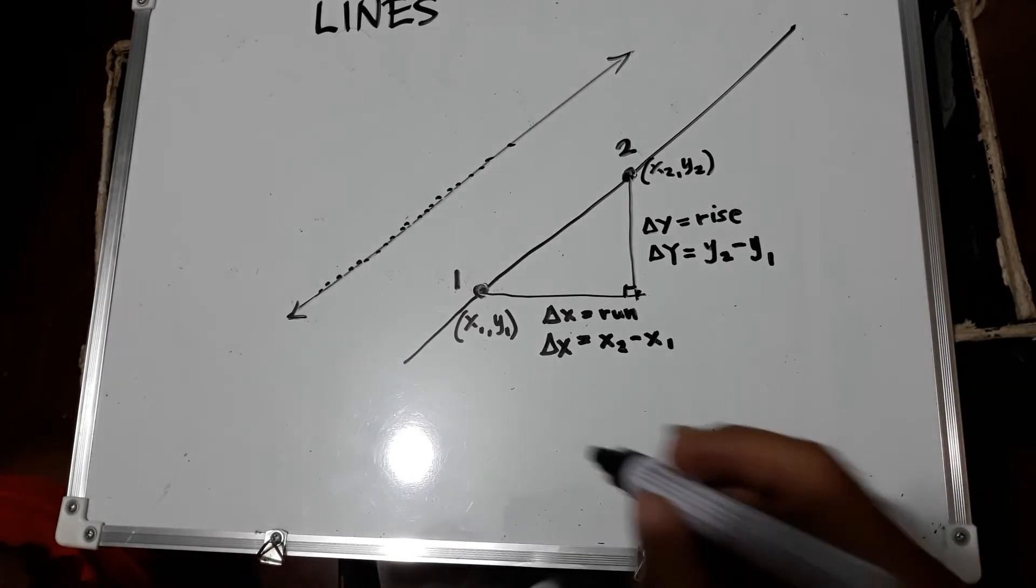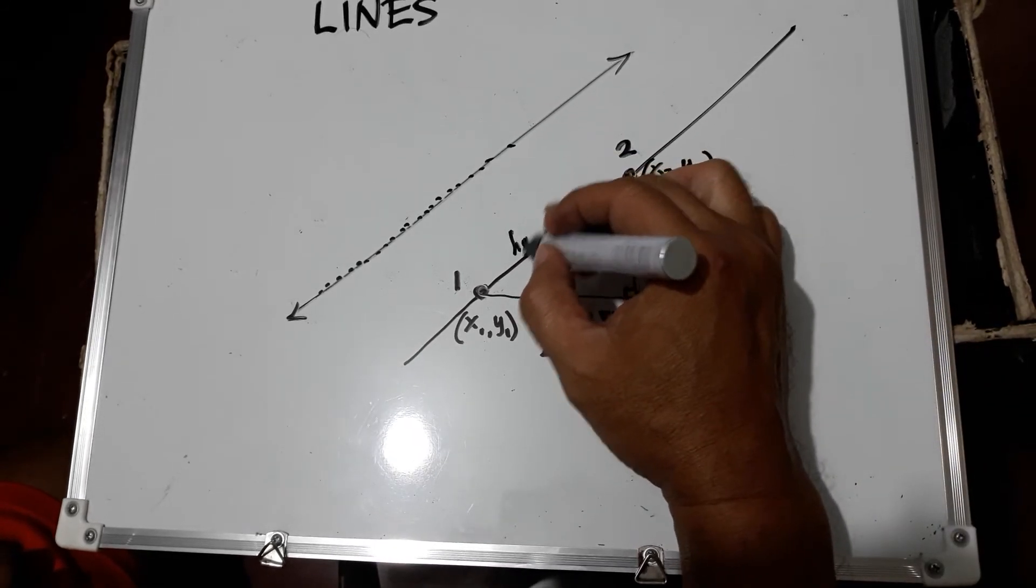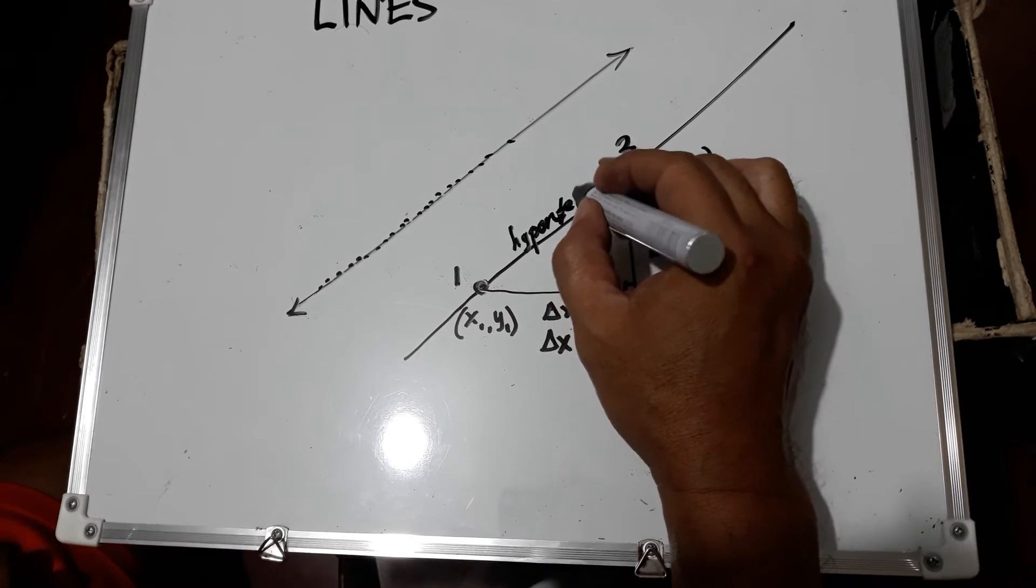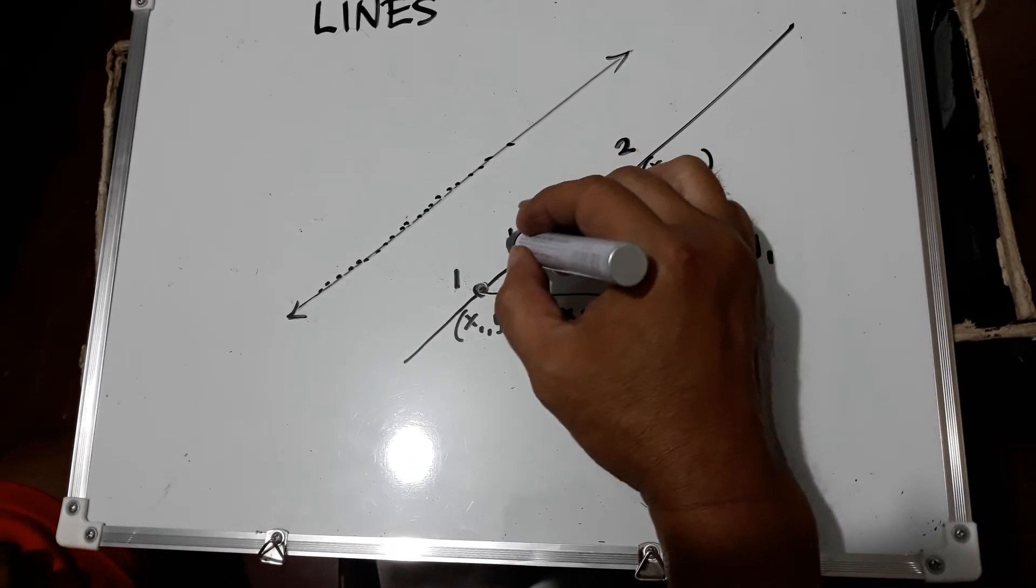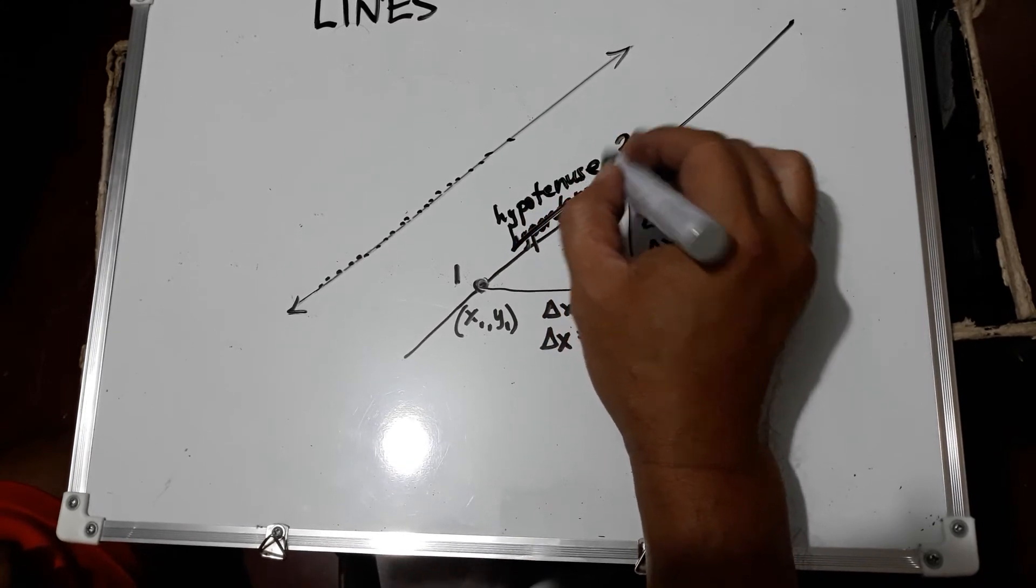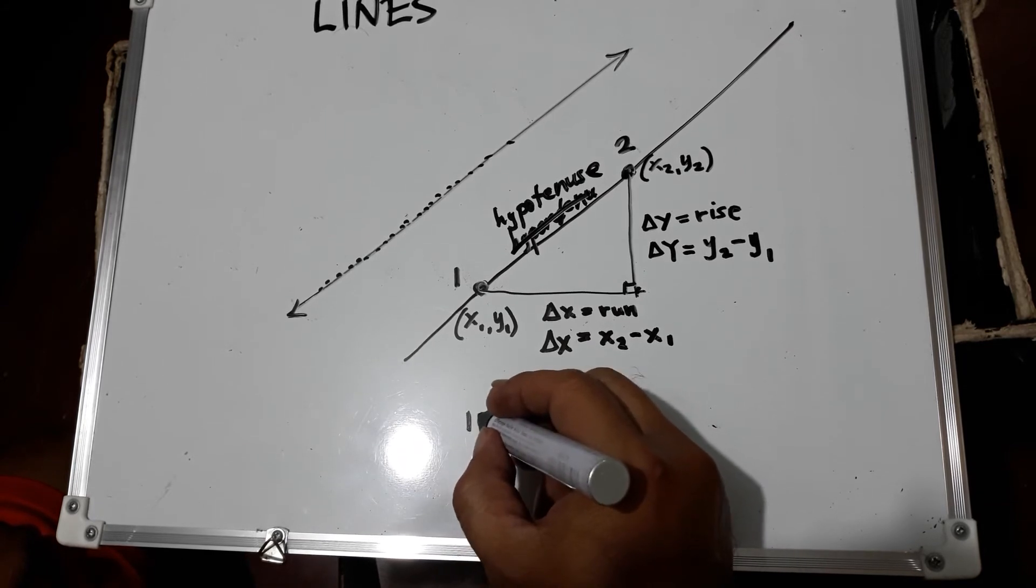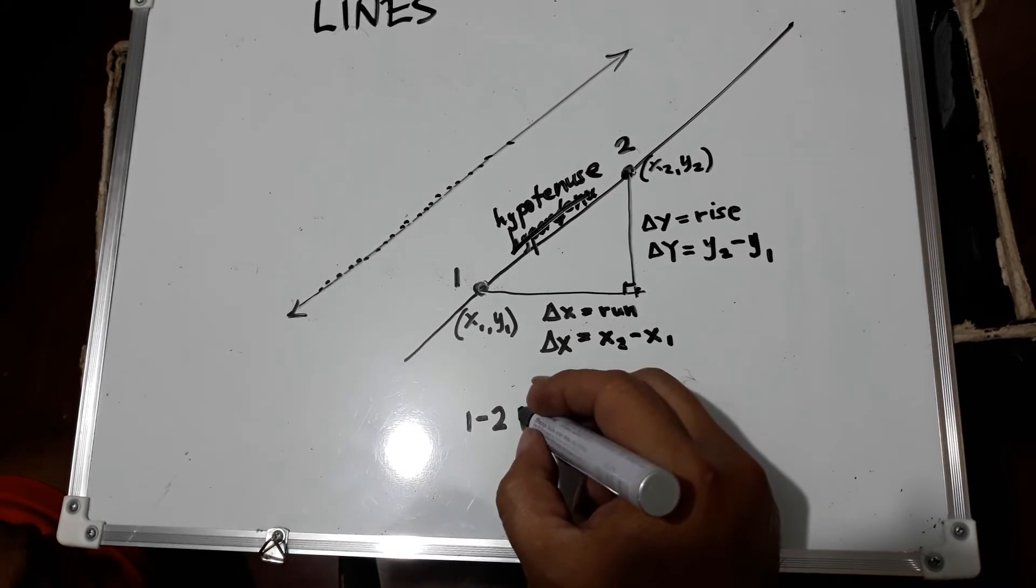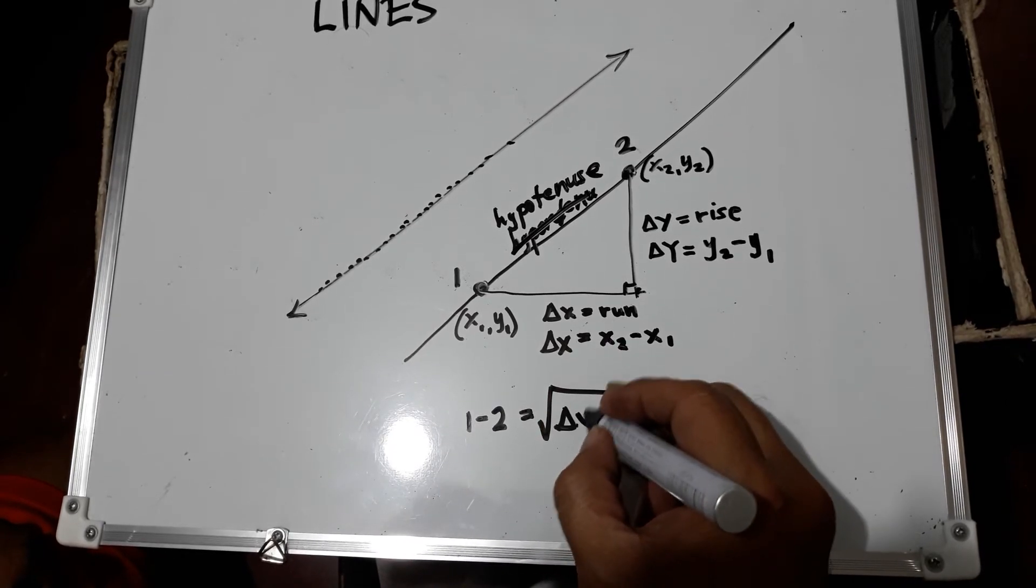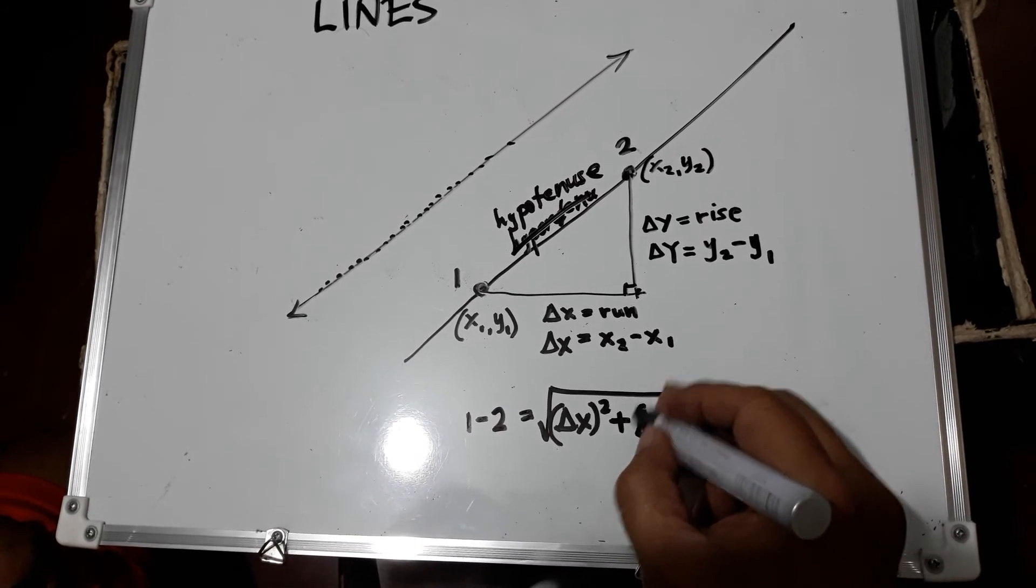By Pythagorean theorem, the distance between 1 and 2 being the hypotenuse, so we can use the hypotenuse. So this one is distance 1 to 2, is equal to the square root of delta x squared plus delta y squared.